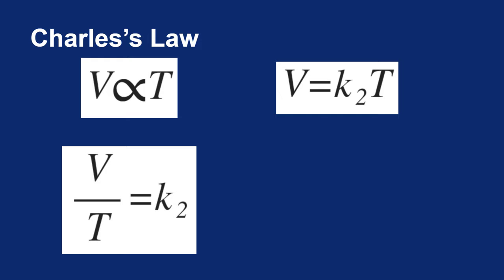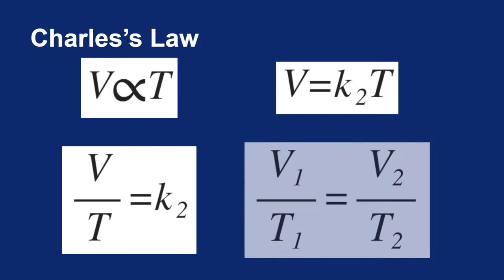And finally, if V over T is a constant, you can write the statement V1 over T1 equals V2 over T2. So all four of these statements are the exact same equation. The last one, though, is probably going to prove the most useful to us.